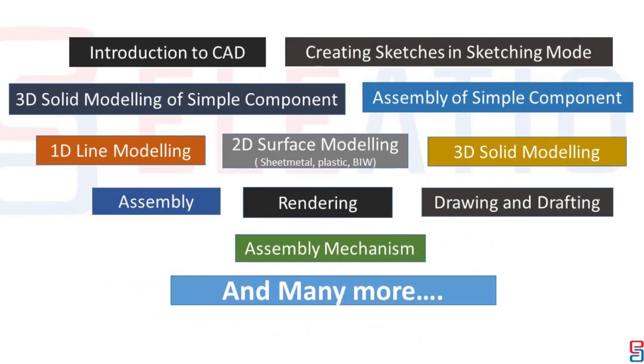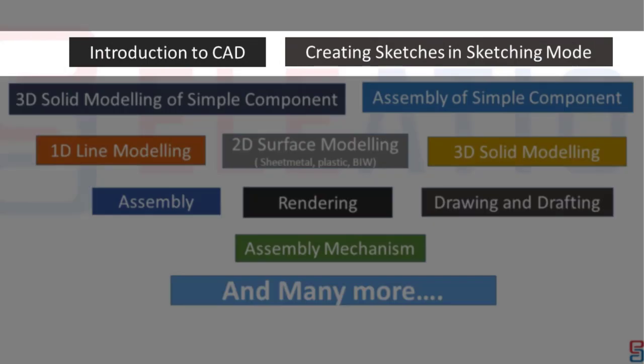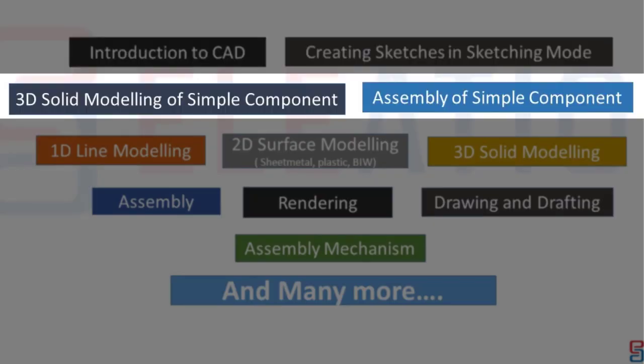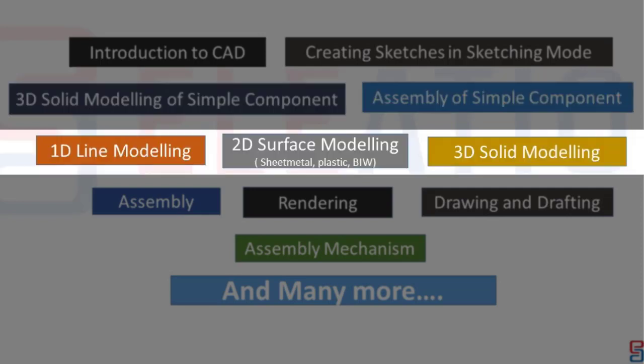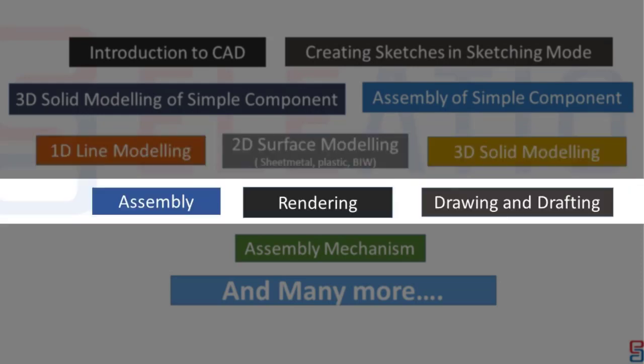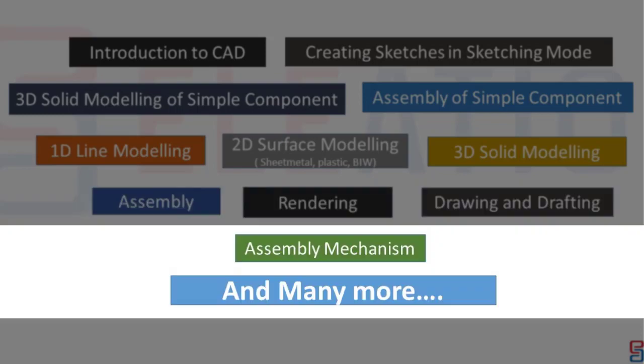Creo course content includes introduction to CAD, creating sketches in sketching mode, 3D solid modeling of simple component, assembly of simple component, 1D line modeling, 2D surface modeling, sheet metal, plastic, BIW, 3D solid modeling, assembly, rendering, drawing and drafting, assembly mechanism, and many more.